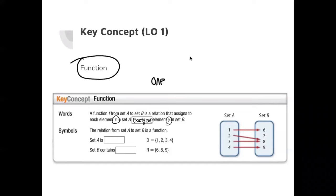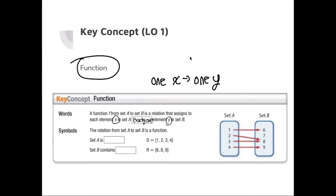Looking at this diagram, one x is matched to one y, so we call this a function. What if one x is not matched to one y? For instance, if one is matched to both six and seven, then this is not a function — we call this a relation. Some students are also confused: if you look at eight, there are two corresponding x values, but that's not a problem. Although one y has two x, it's still a function. As long as one x is matched to one y, it's a function.